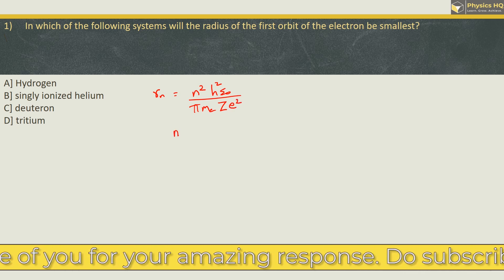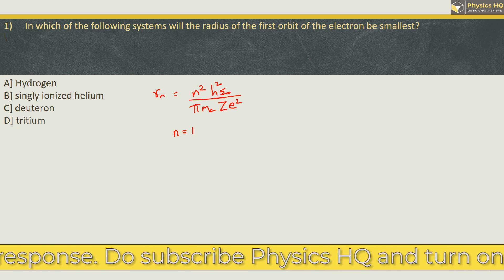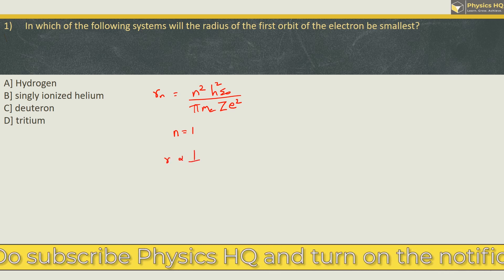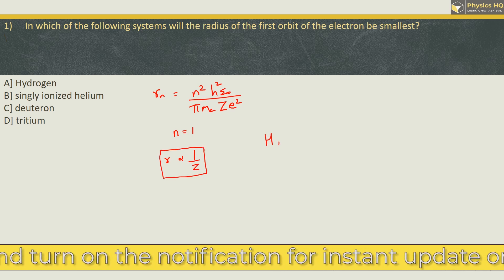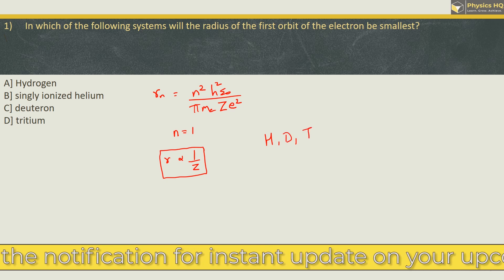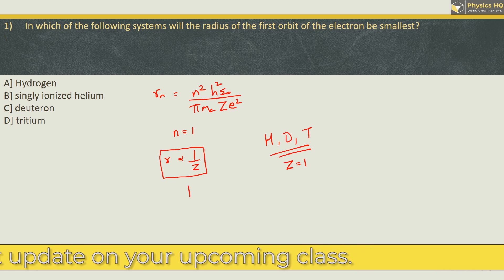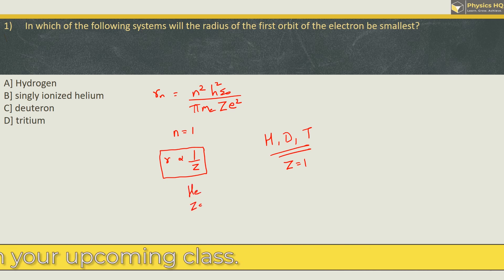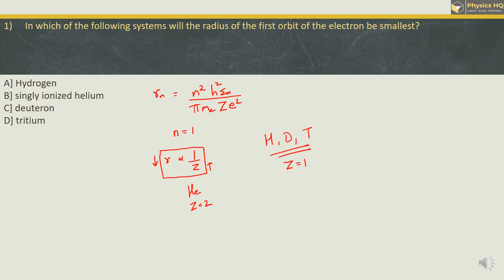In our case we are talking about the first orbit, so n = 1. We observe that r is inversely proportional to the atomic number Z. For the three options — hydrogen, deuteron, and radium — the value of Z is equal to 1, and for helium Z is equal to 2. Z is nothing but the number of protons that an atom has. Since Z is more for helium, the radius of the first orbit of helium will be the minimum. Therefore the correct option is option B.